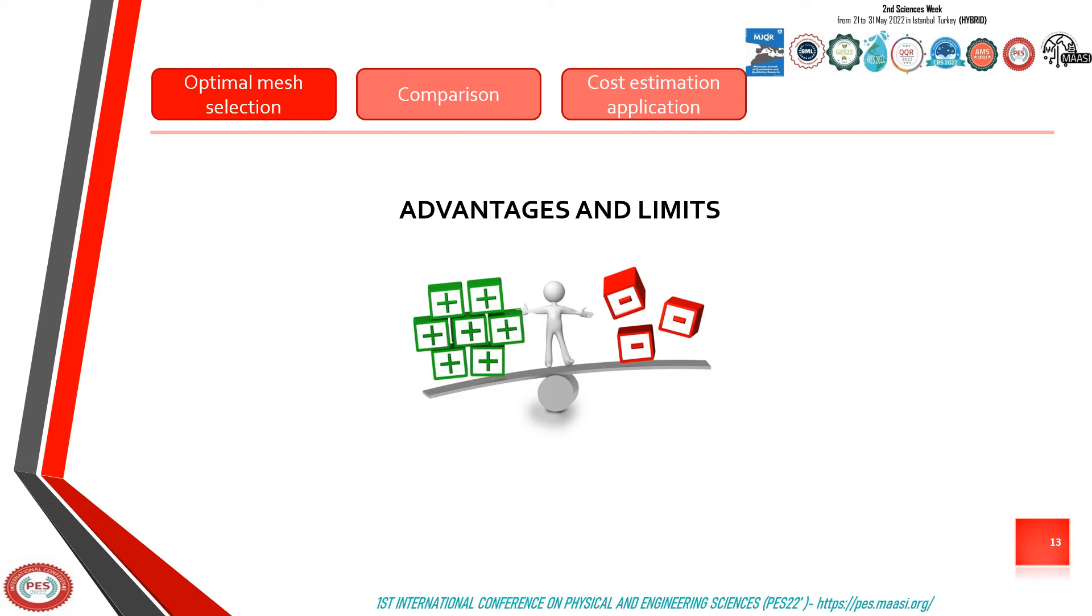In the following, we use the third level of the adapted mesh since it gives the results very close to those of the levels that follow it, with reduced computation time and storage space. We use this method to solve the partial derivative equation determined previously.